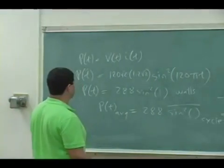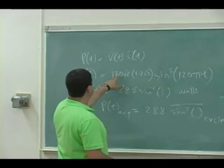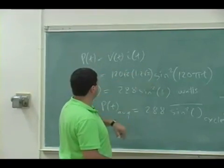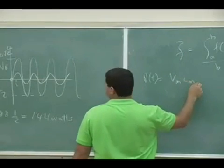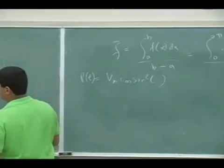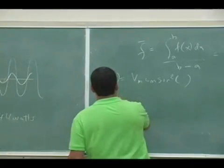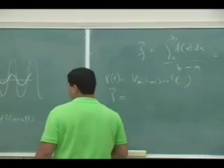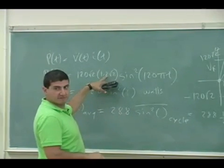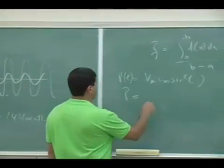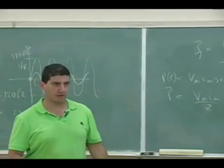But how can I generalize that result? Let me generalize it. Let me just write this as V max. So power T is V max I max sine squared of something. And then power average came out 120 times 1.2 is 144. So power average came out V max I max divided by 2. That's the more general way of saying it.